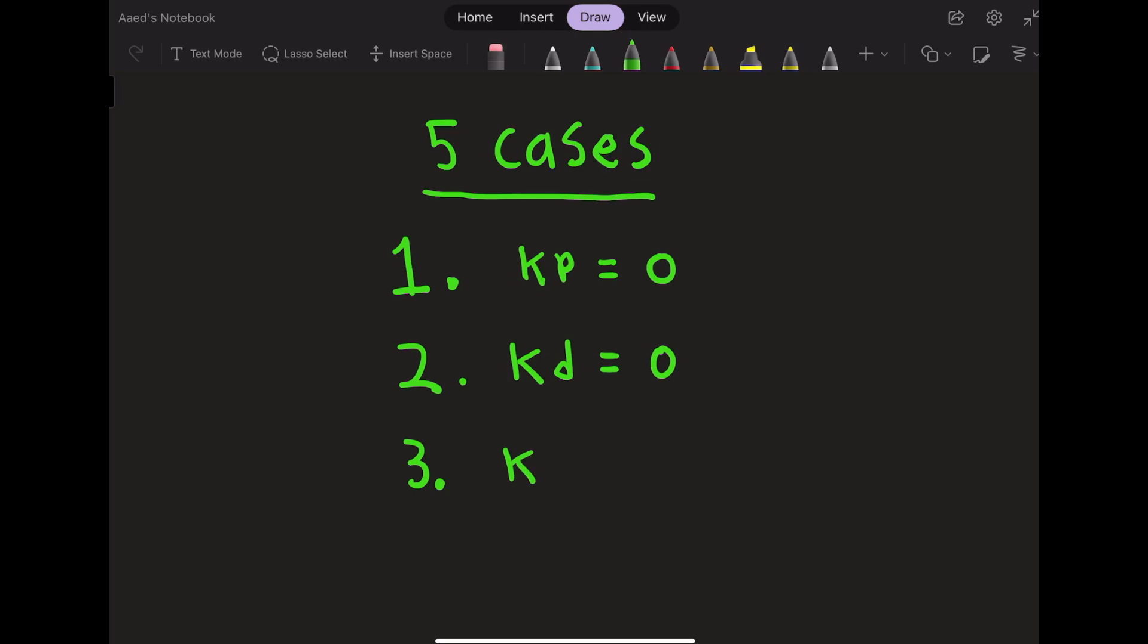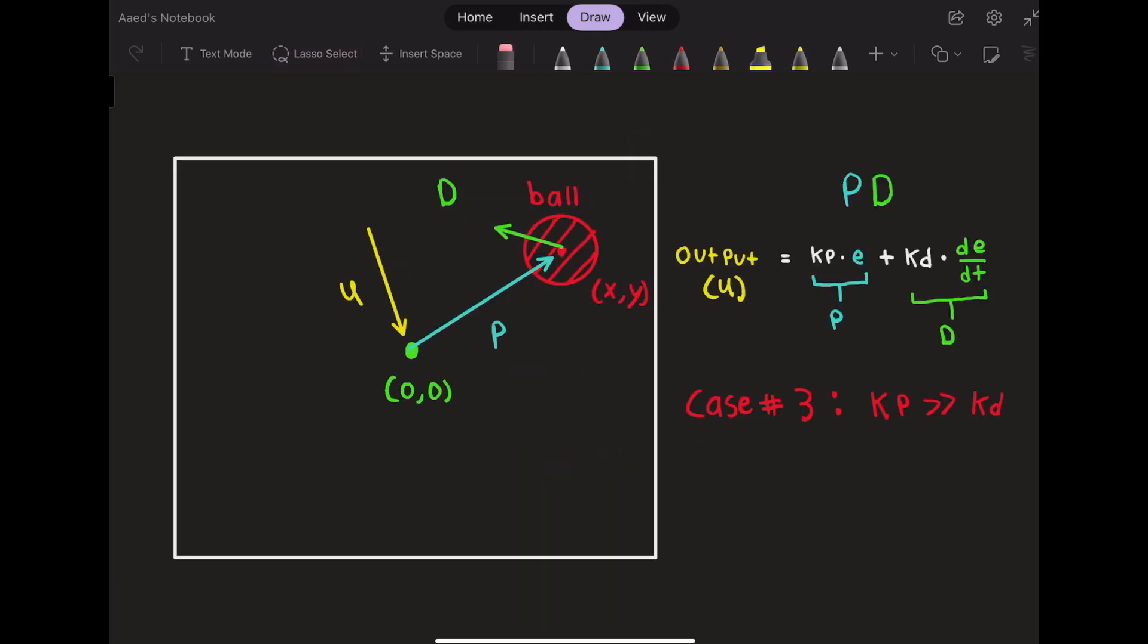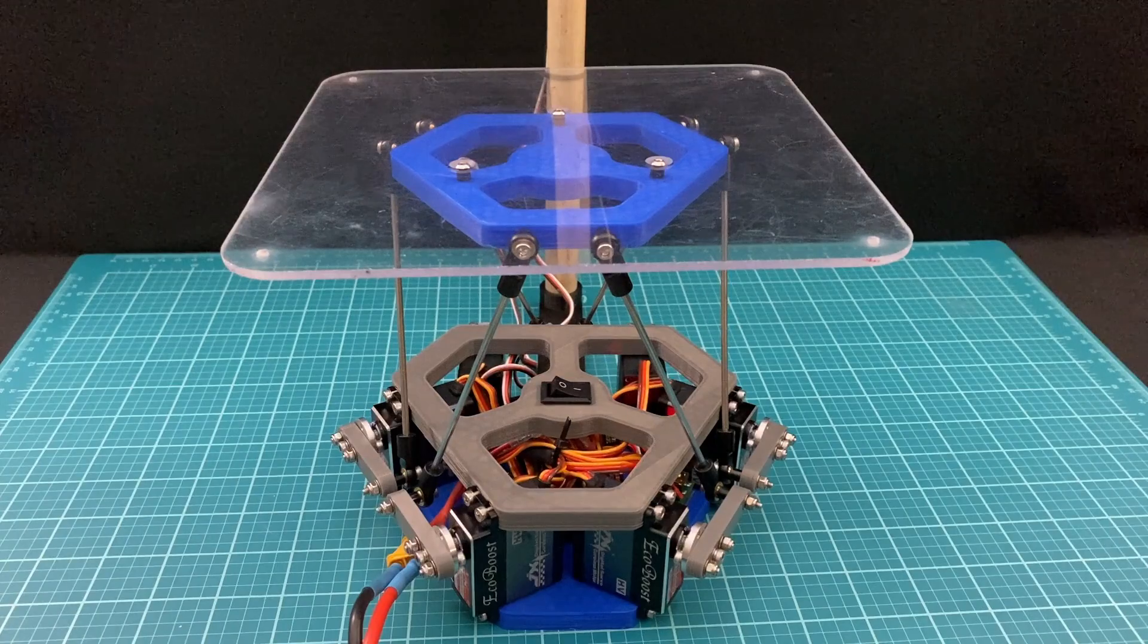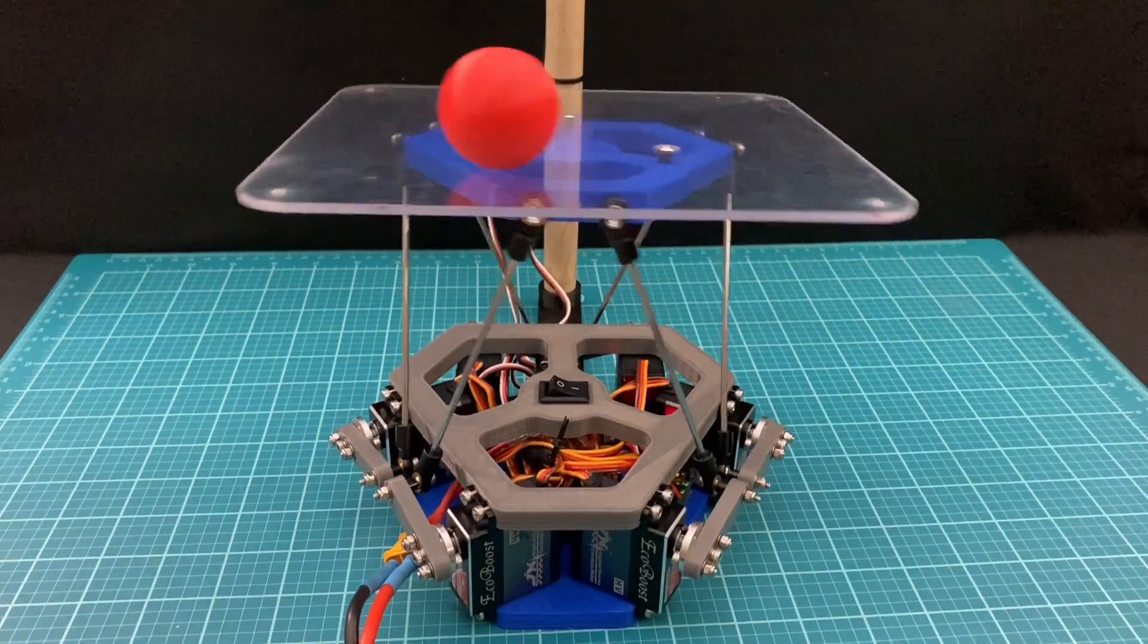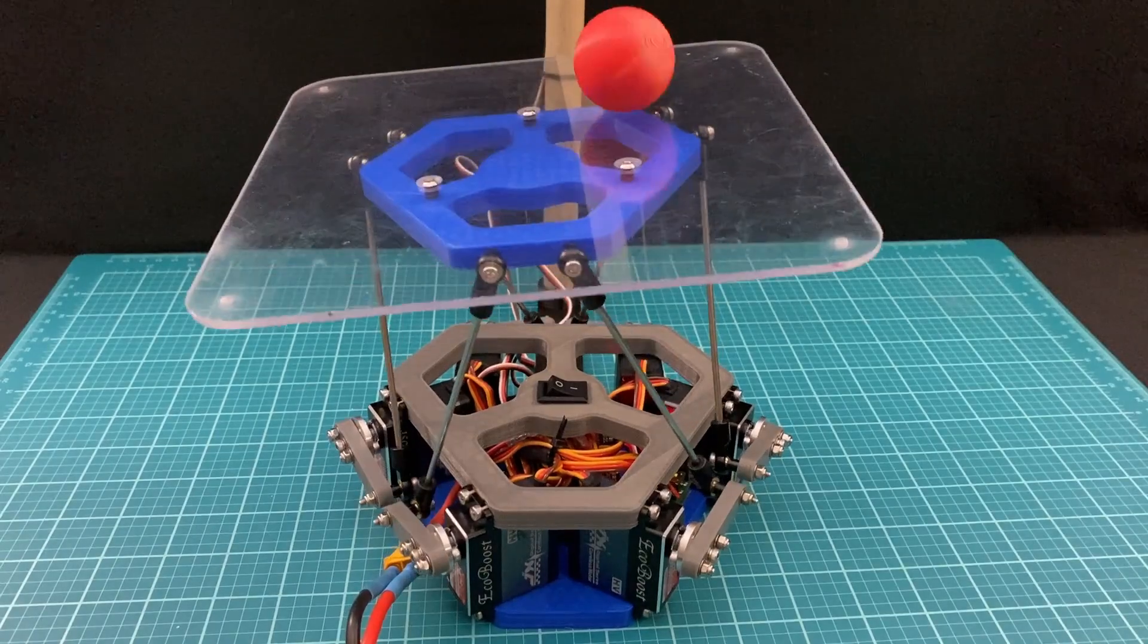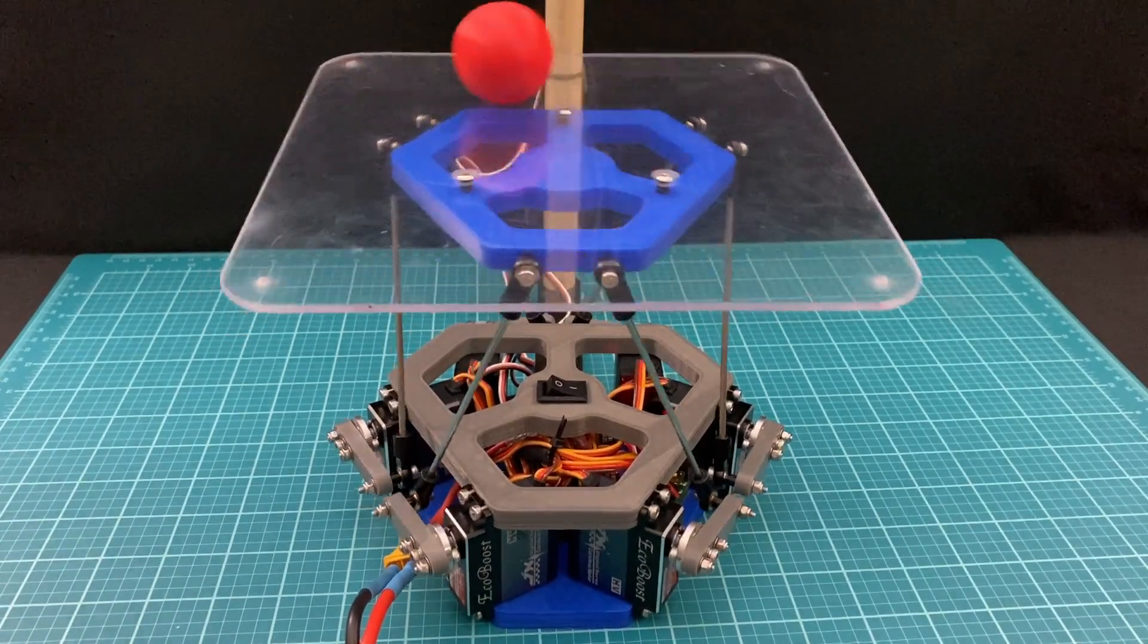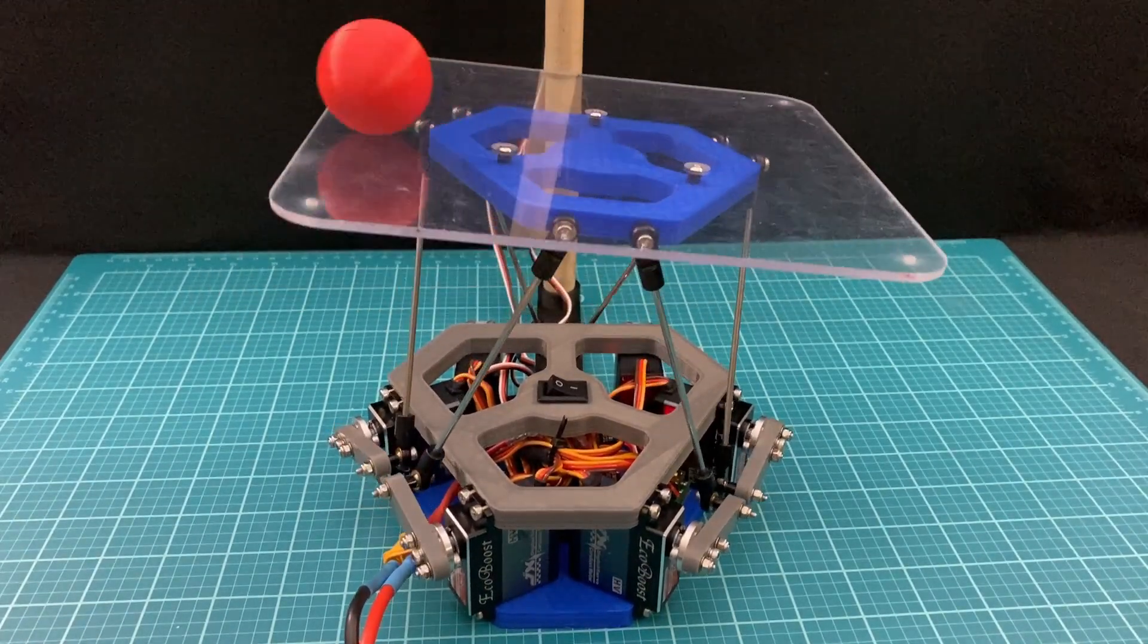The third case occurs when kp is too high. In this case, the proportional term overshadows the derivative term. What this looks like is a robot that overcompensates for the position of the ball. This leads to a sort of swaying motion, and the ball can never reach equilibrium.